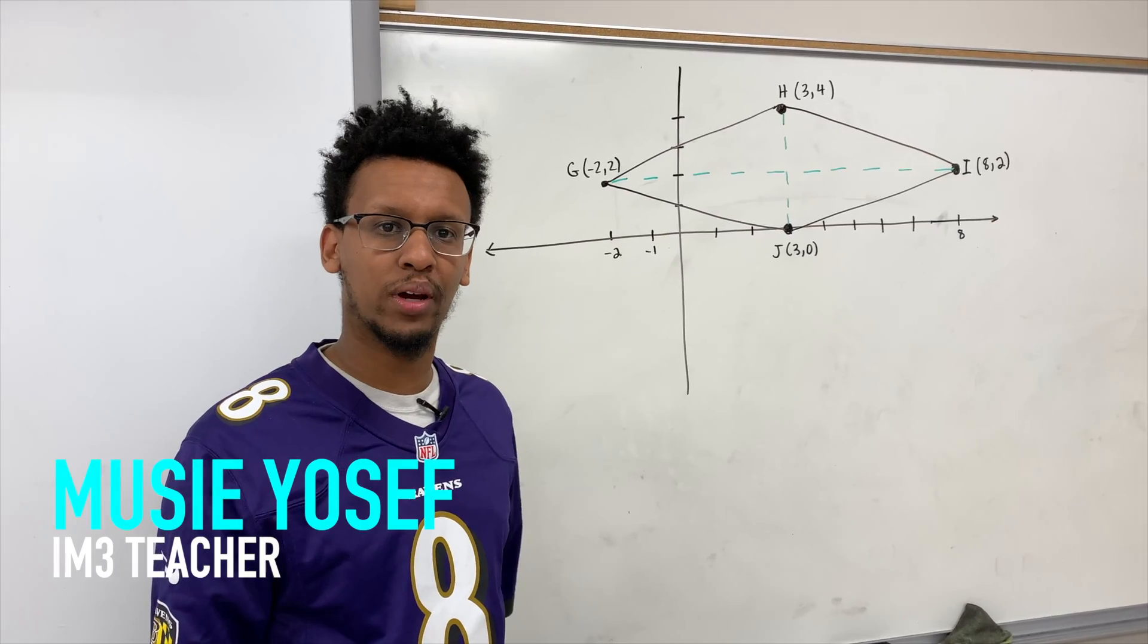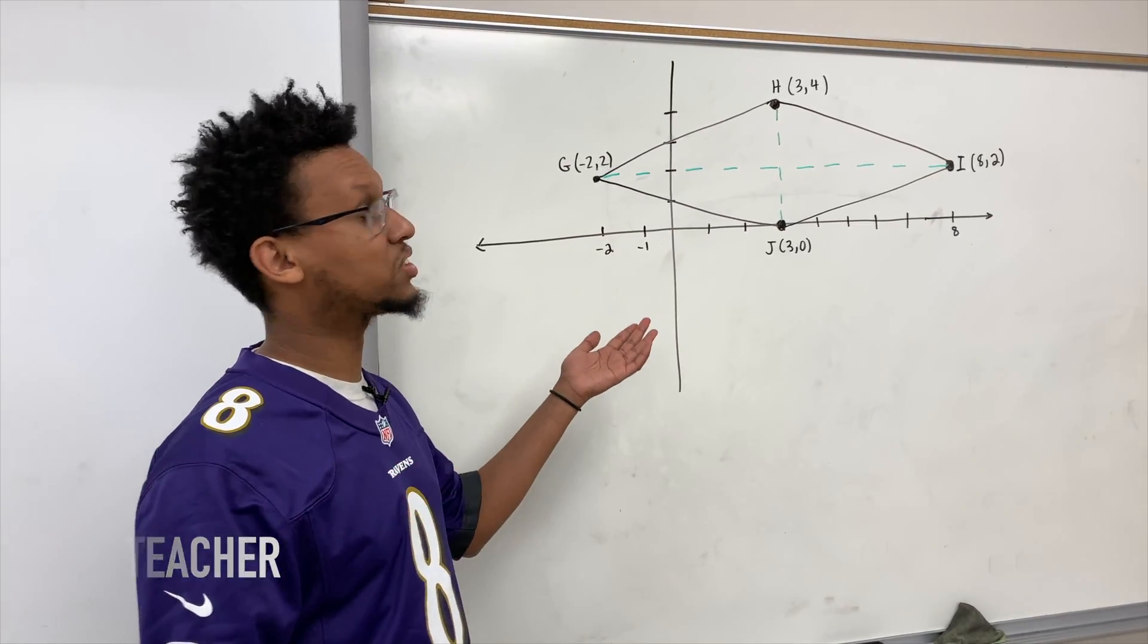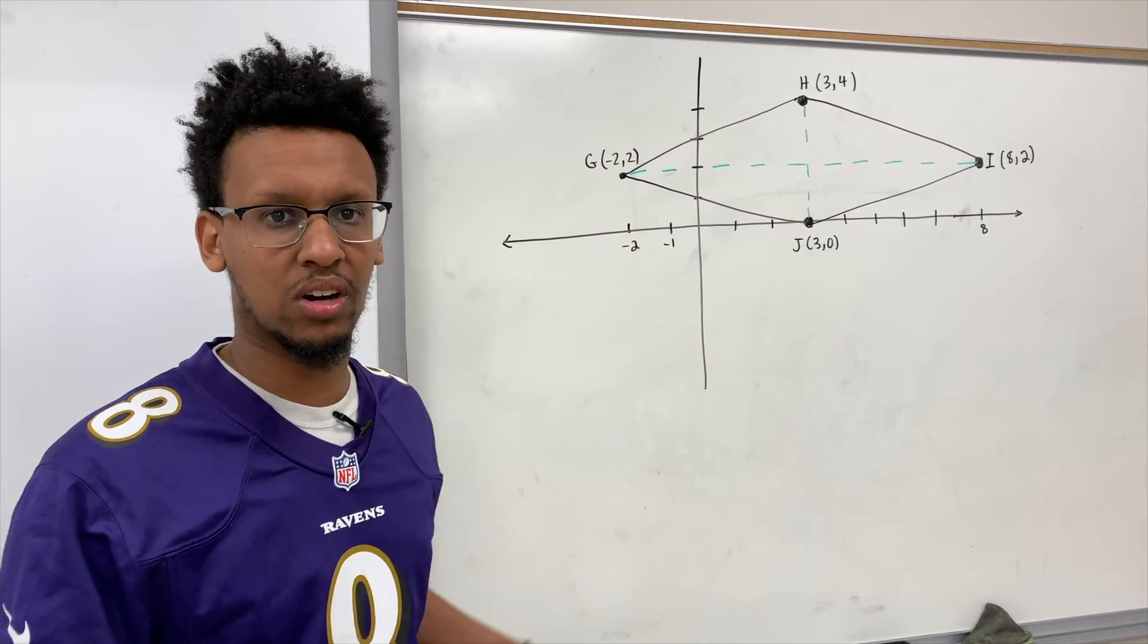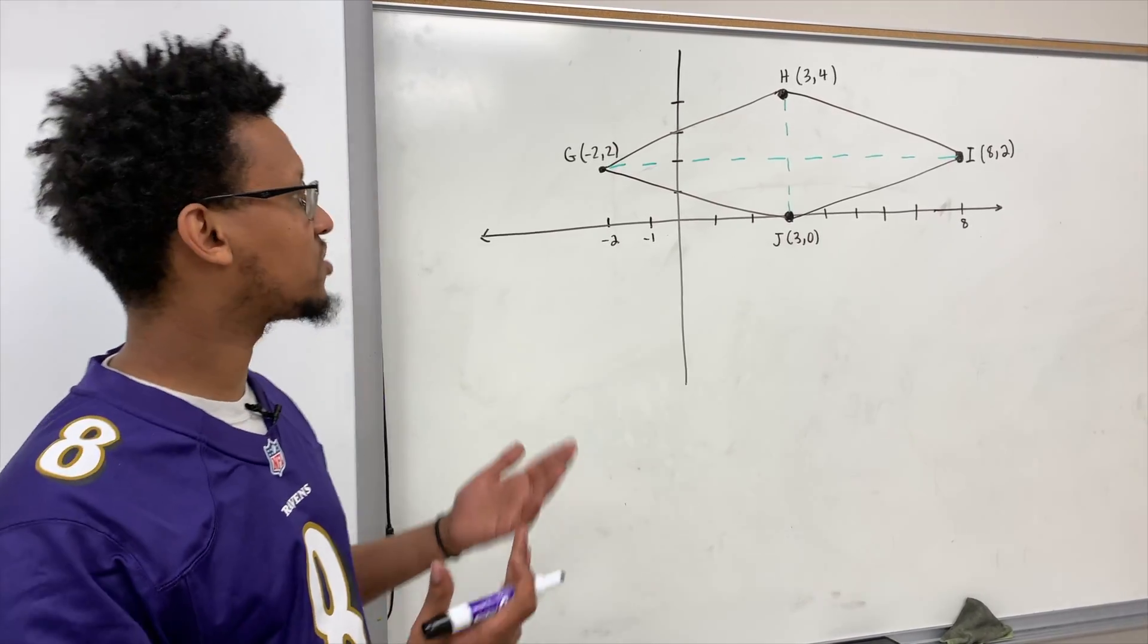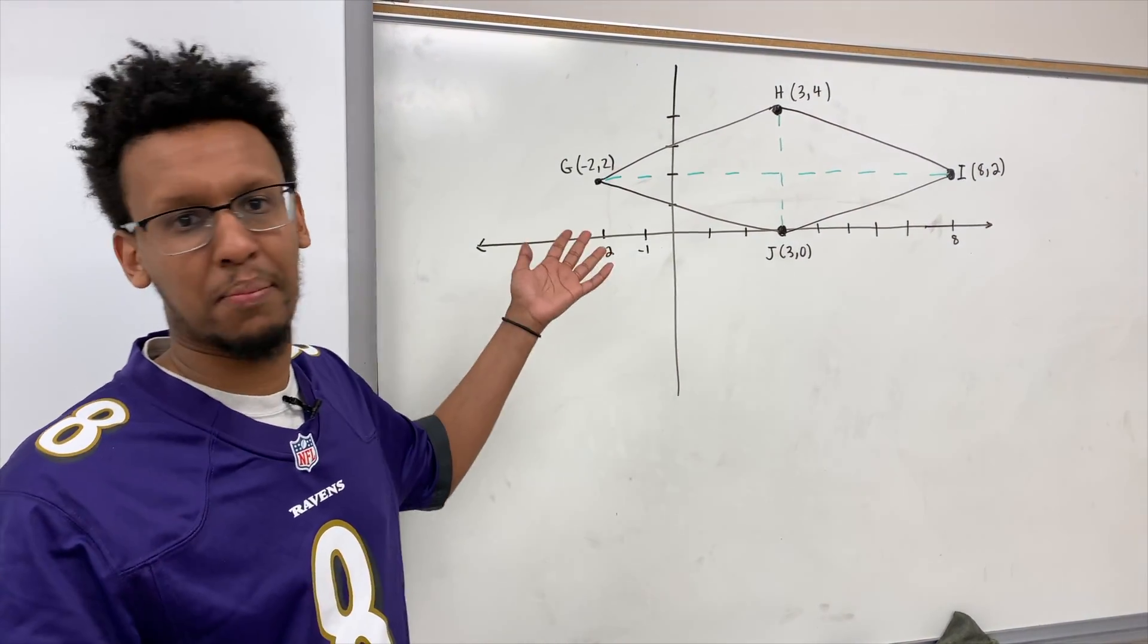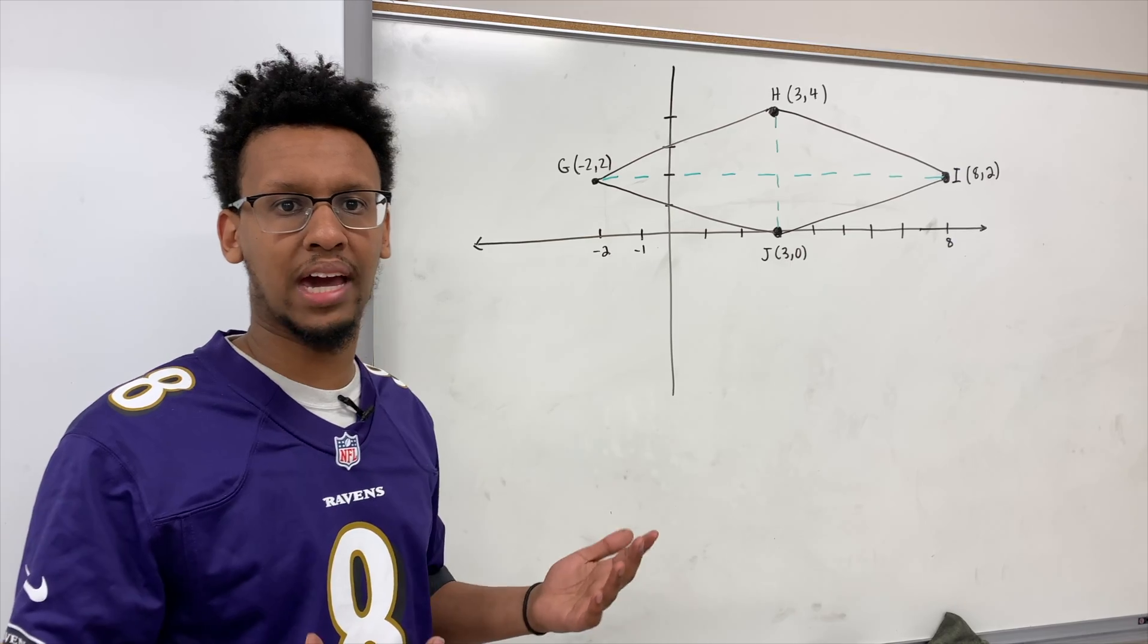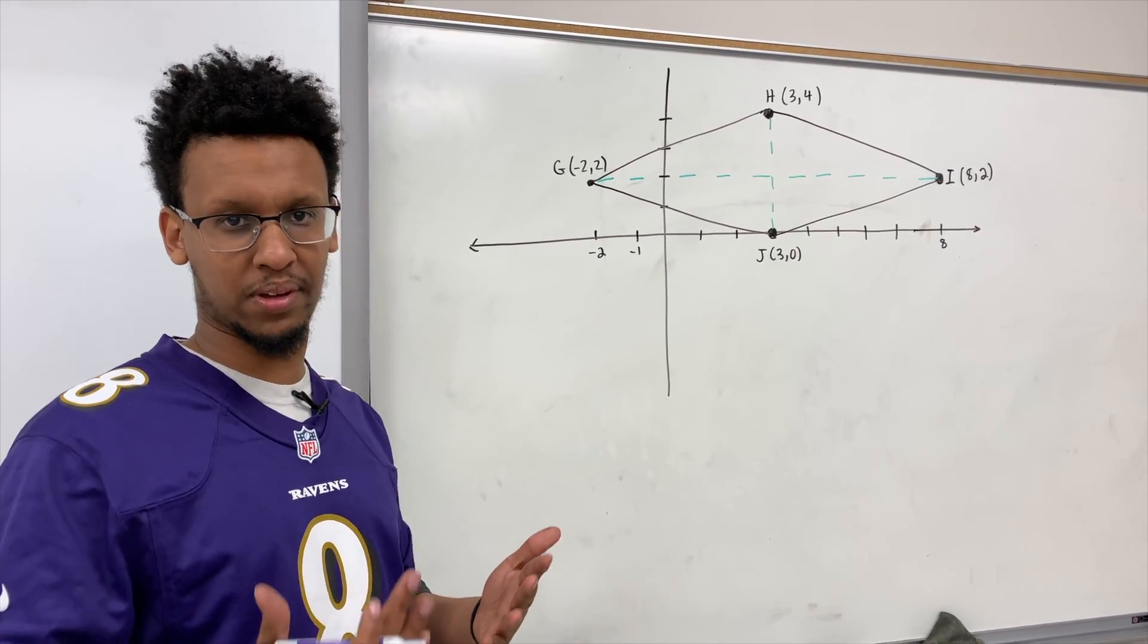Hello everybody. Today we are going to prove that this shape is actually a rhombus. So when it comes to proving a shape, it's more than just looking at it. This might be a square, it might be a parallelogram, so we have to find out the details about a rhombus.